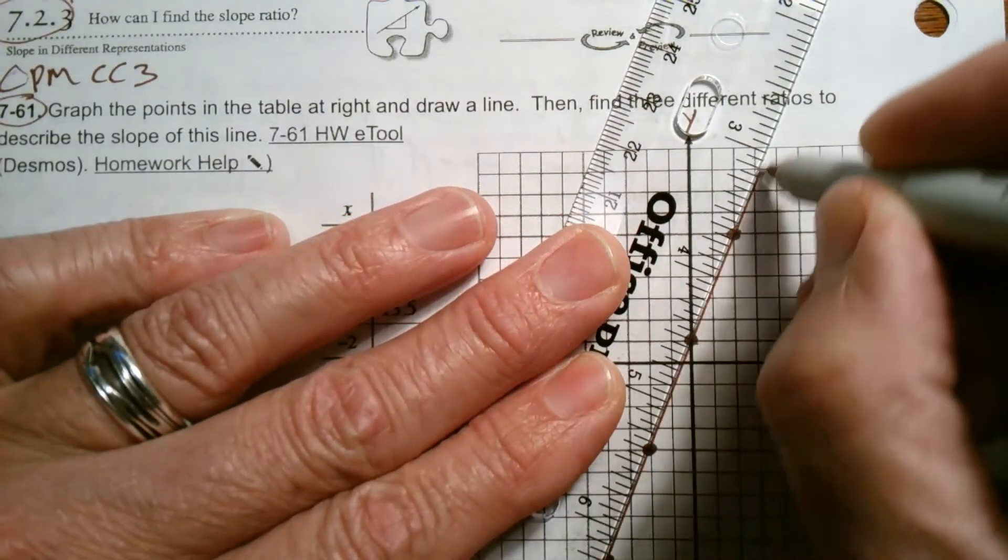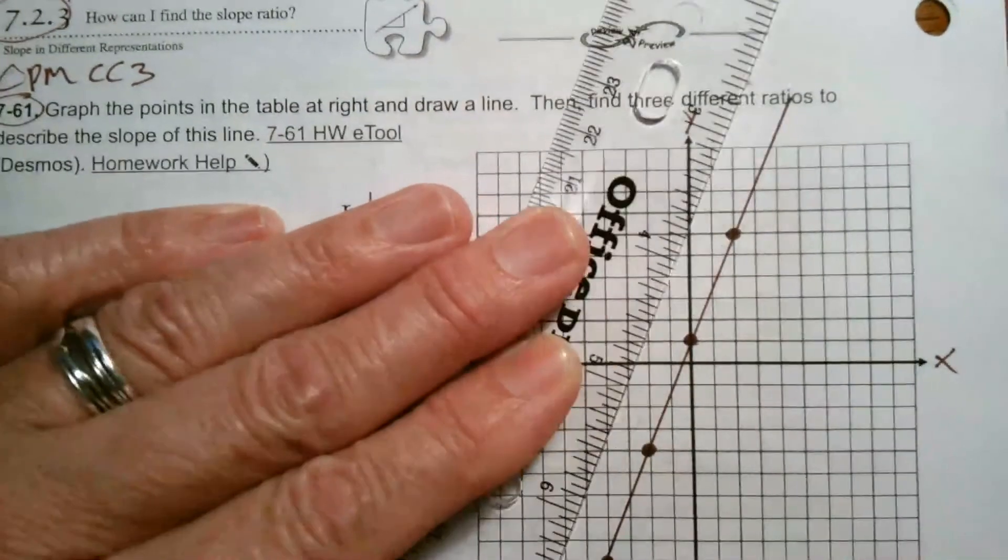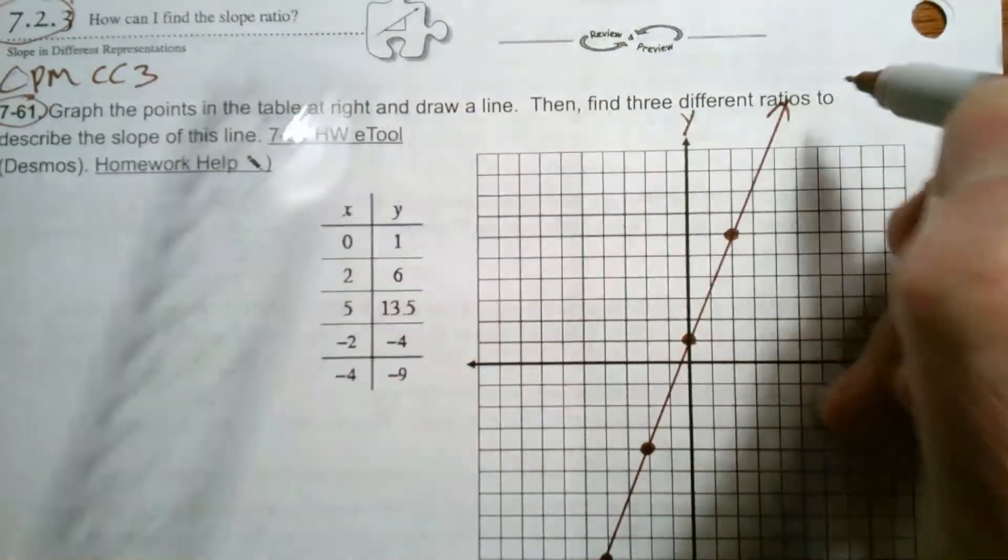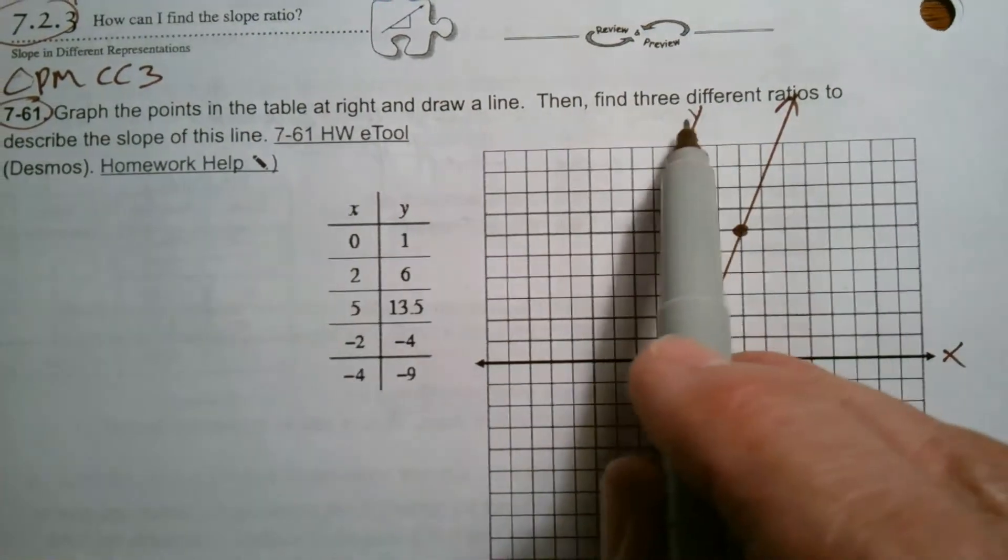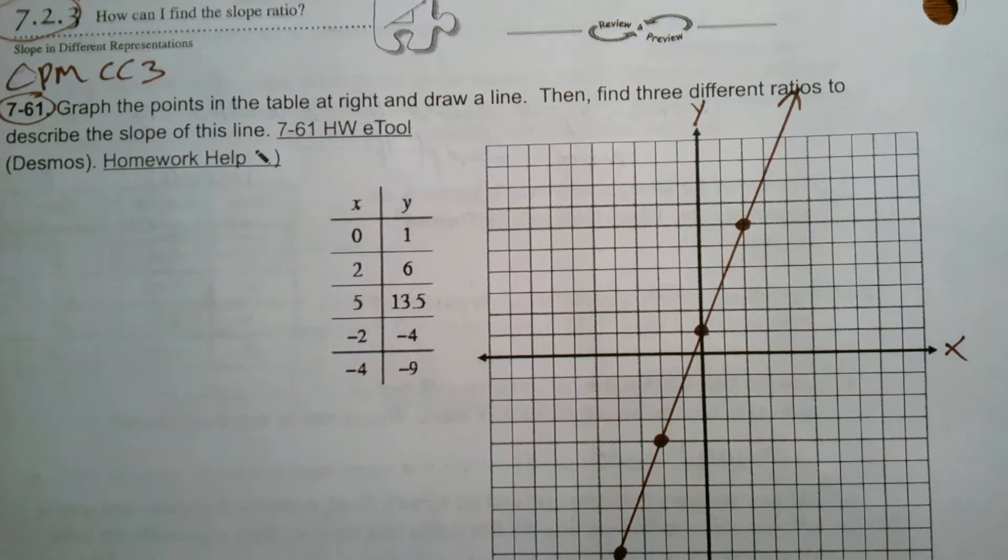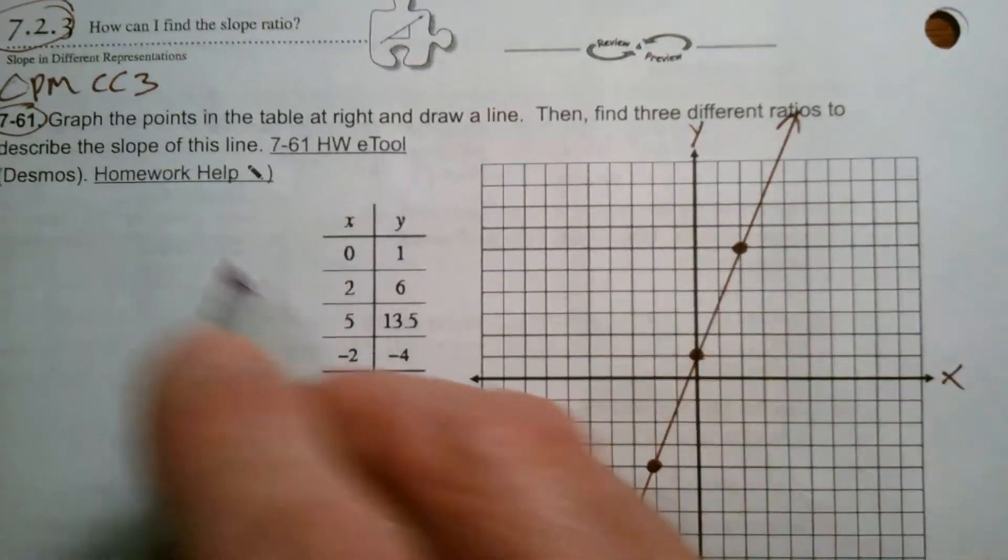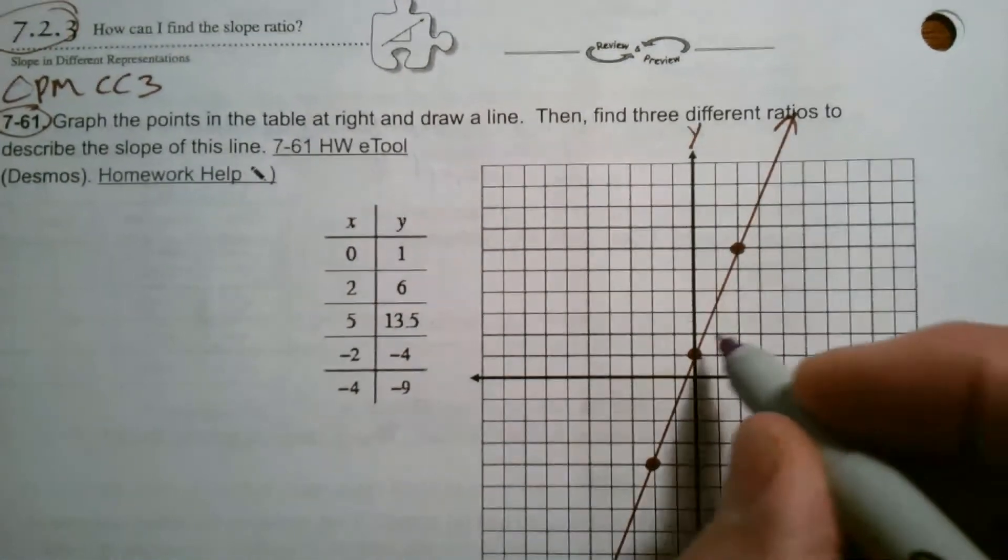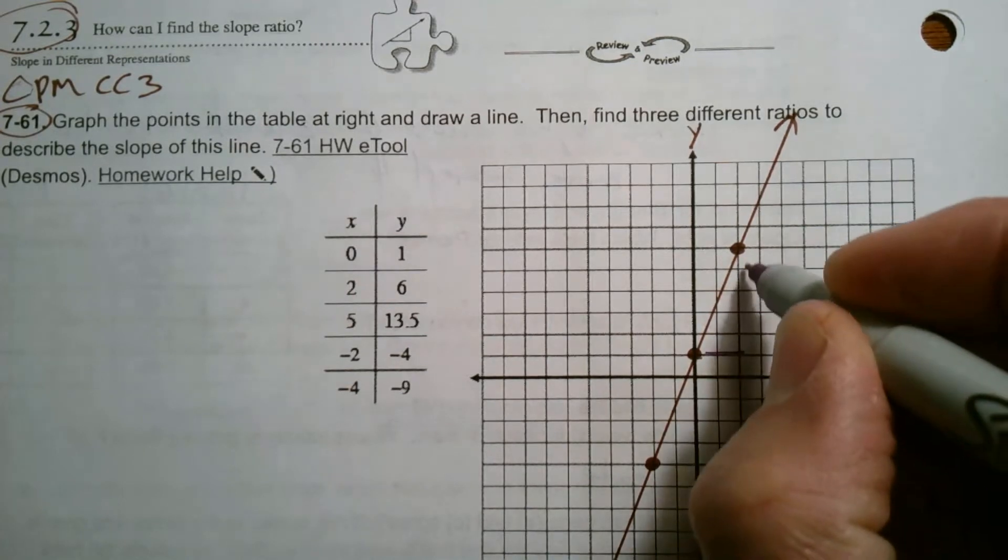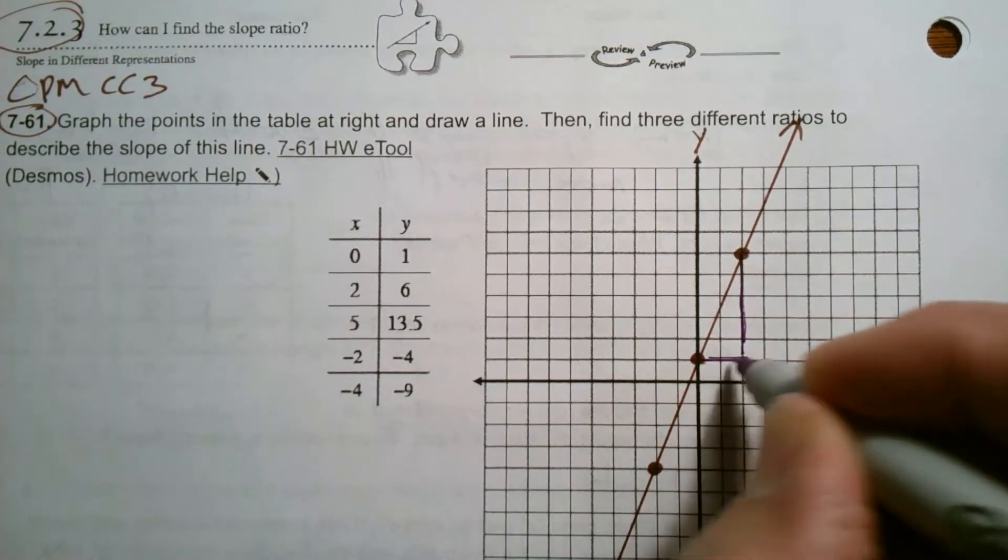From those four points, I notice they're all in a line, right? So I graphed my line. They want three different ratios to describe the slope. So that's looking at what are these slope triangles that I can make, right?